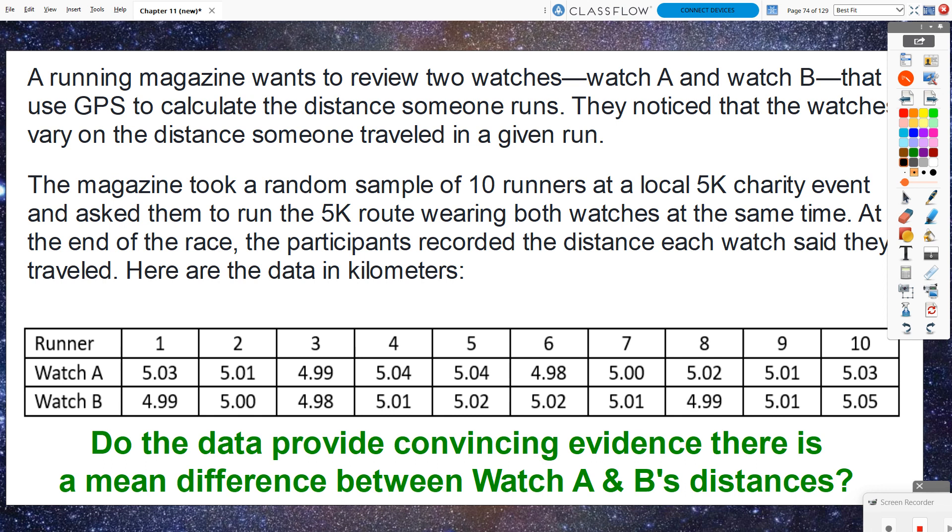The magazine took a random sample of 10 runners at a local 5K charity event and asked them to run the 5K route wearing both watches at the same time. For instance, we have one watch on the left wrist, one watch on the right wrist, so they should be traveling the same exact distance at the same time. At the end of the race, the participants recorded the distance each watch said they traveled. Here are the data in kilometers.